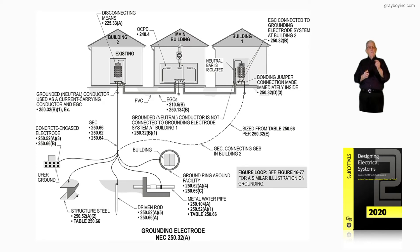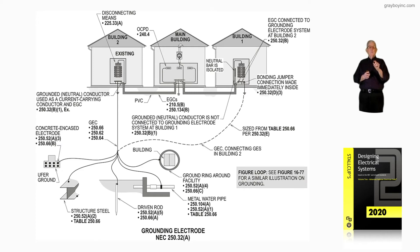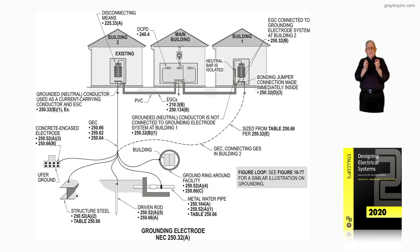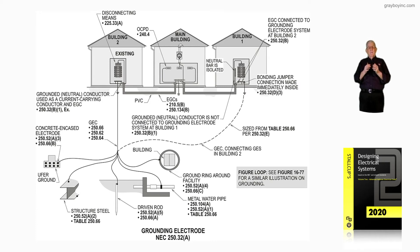If the steel floats, you wouldn't use 250.52(A)(2) for the steel. You would use 250.104(C) — as in car — and it has to be bonded in. You don't want it to float if it's likely to become energized. Any of those electrodes could be present or maybe not present at all, so you have to provide a grounding electrode or system if they're present. That's what this illustration is pointing out.